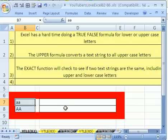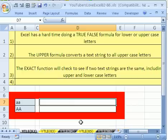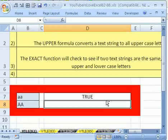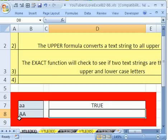We've got to run into a problem, and then we'll try and figure out a solution to it. Let's just do a true-false formula here. Equals is the contents of that cell, little a, little a, equal to the contents of this cell, big A, big A. Enter. Uh-oh, there's a problem.